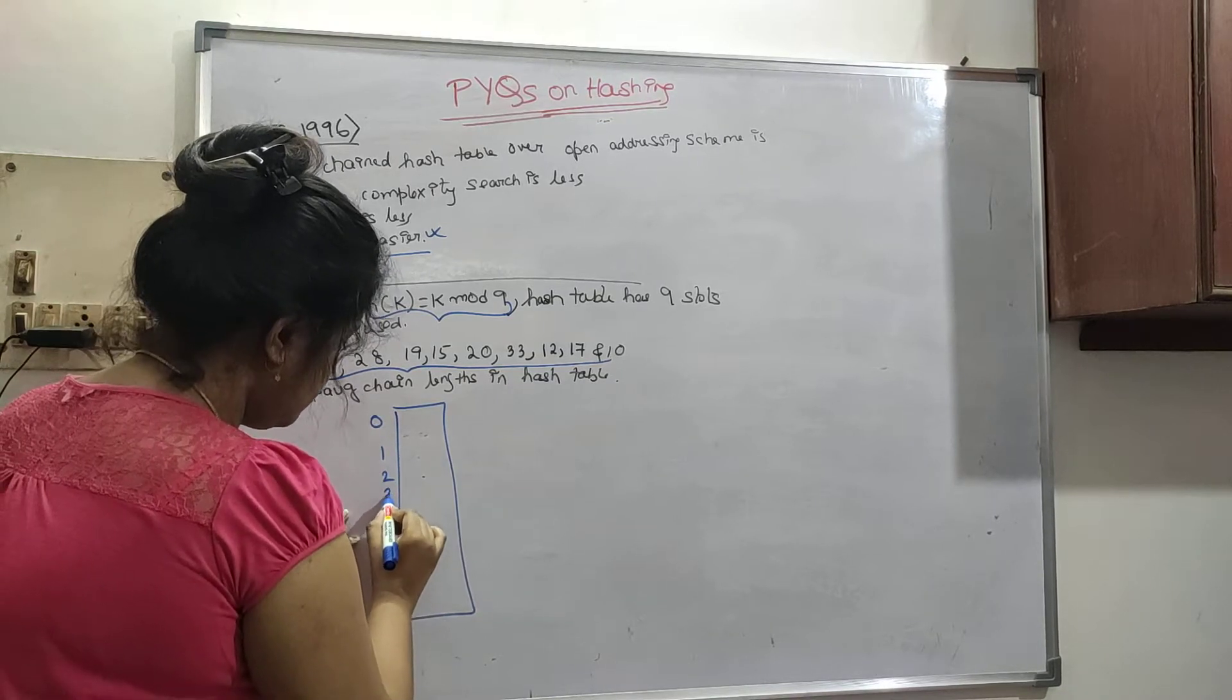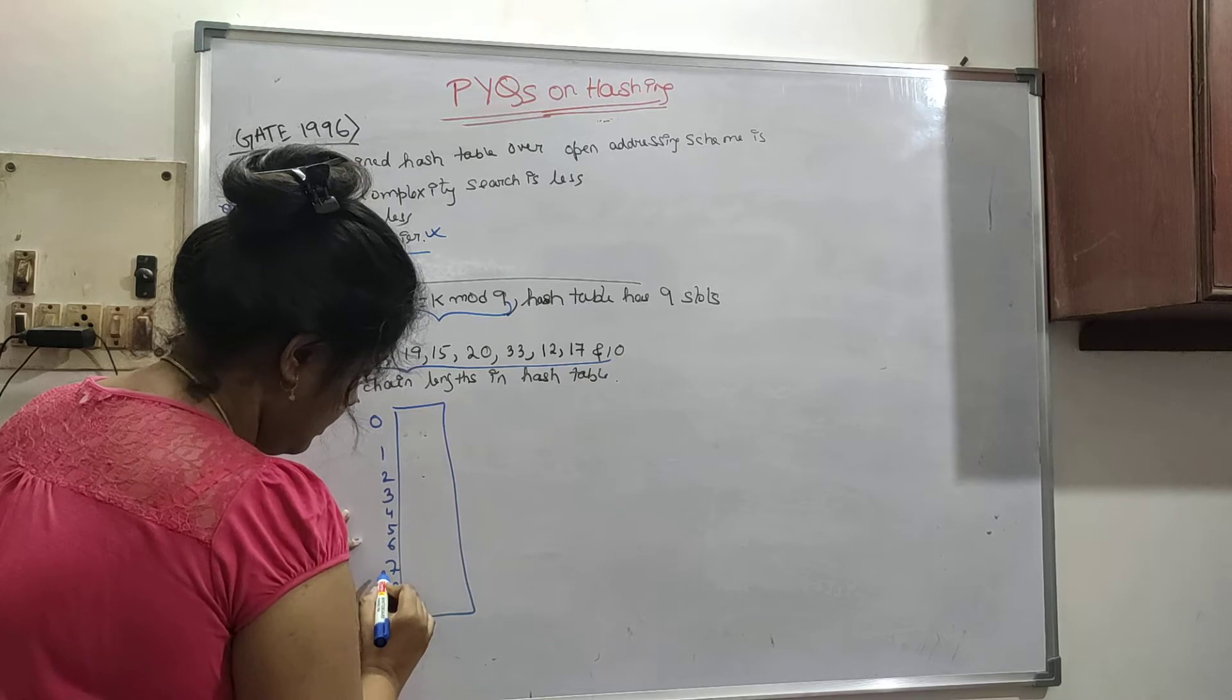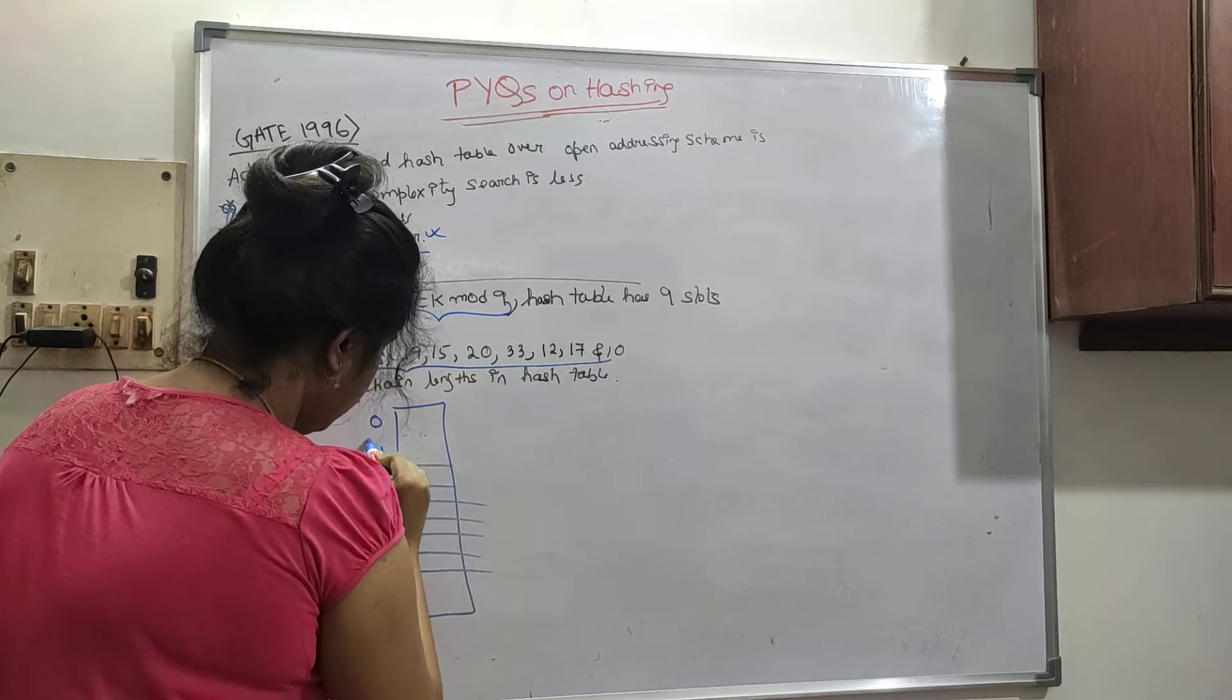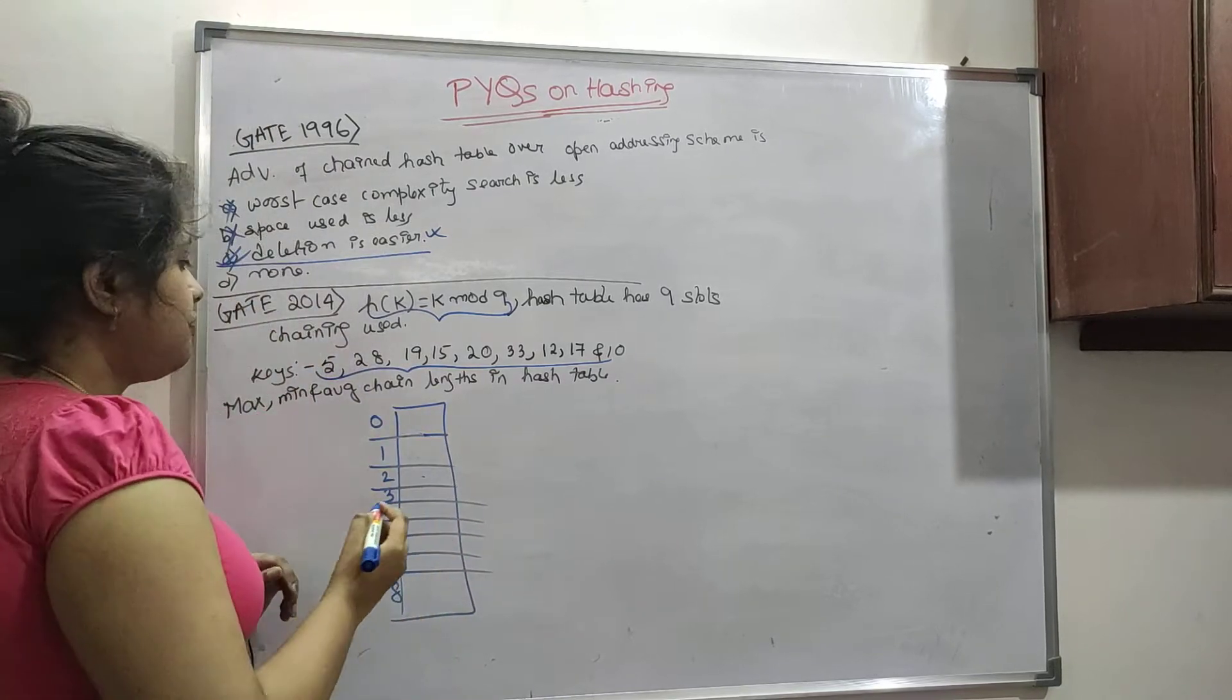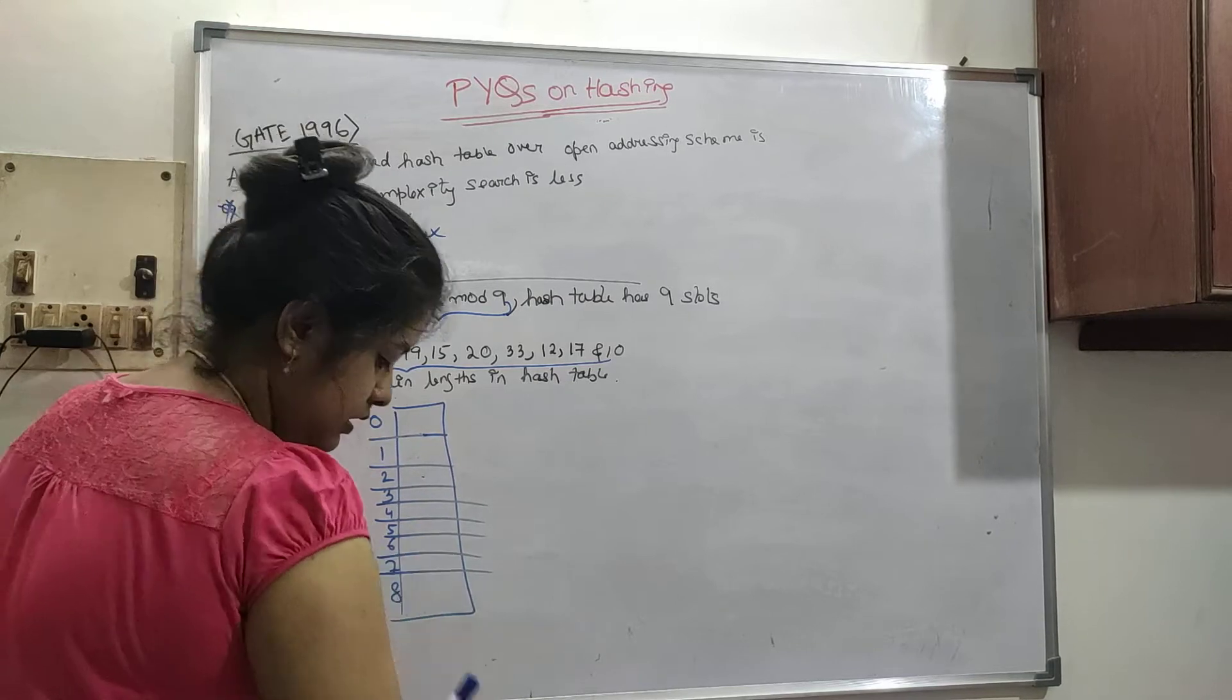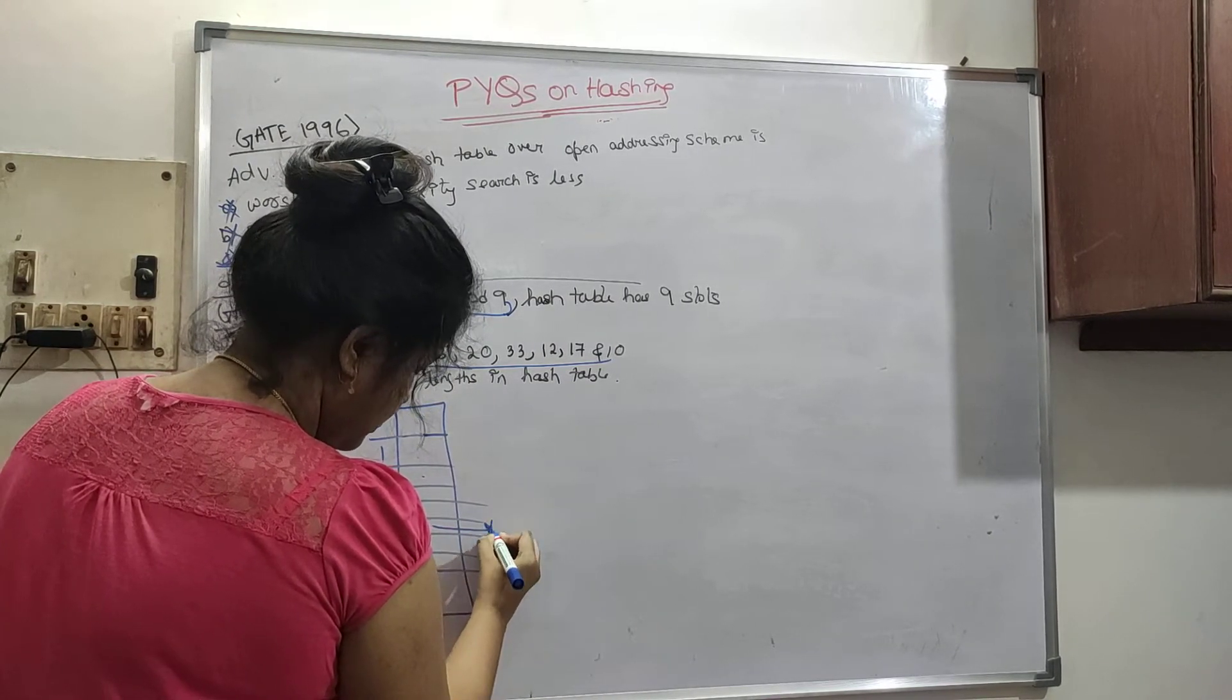So, 0, 1, 2, 3, 4, 5, 6, 7 and 8. Now 5 mod 9 means 5, so it will be put here. 5 will be put here.